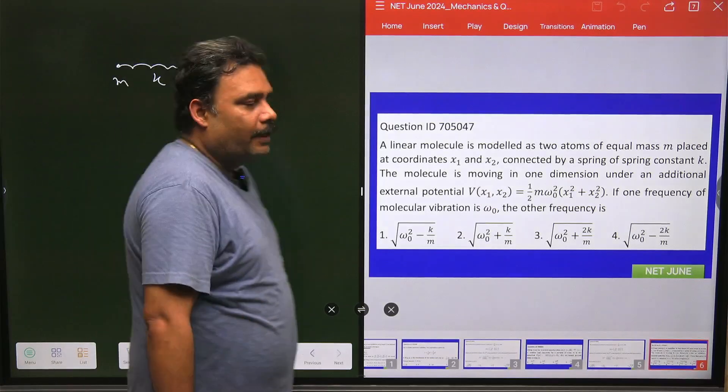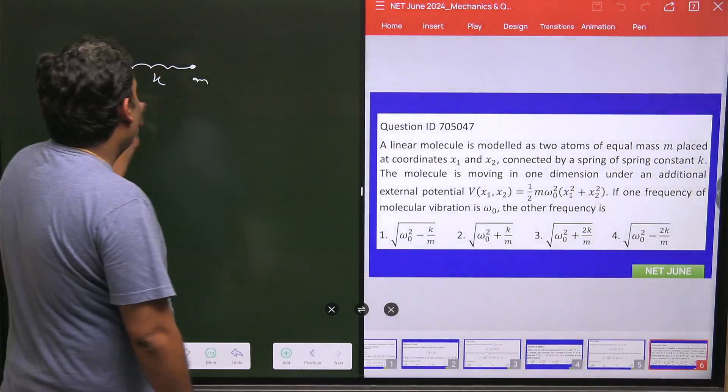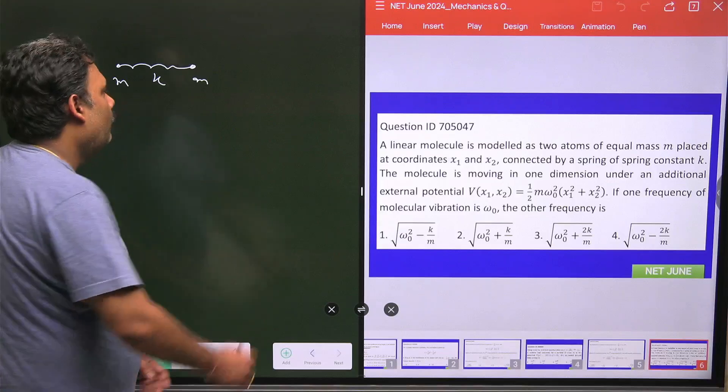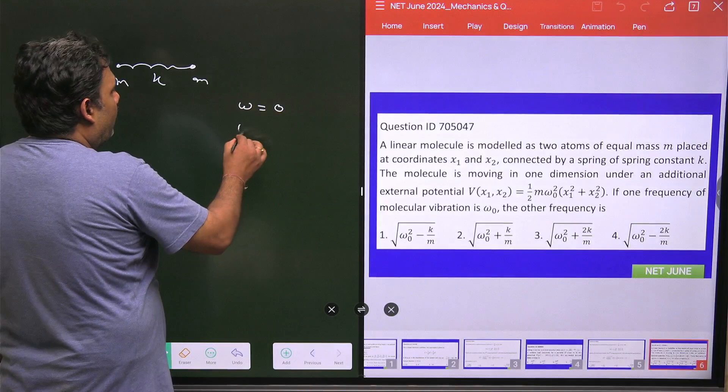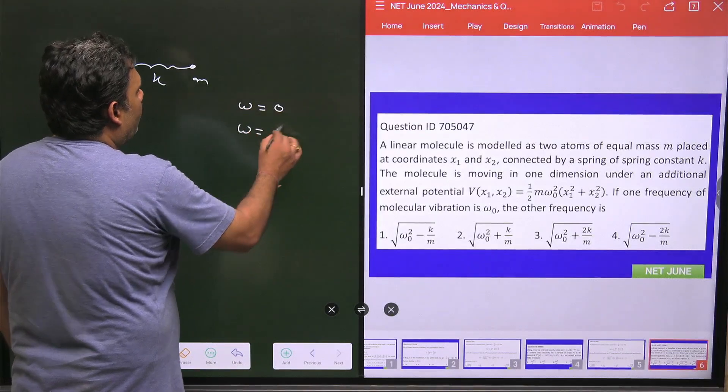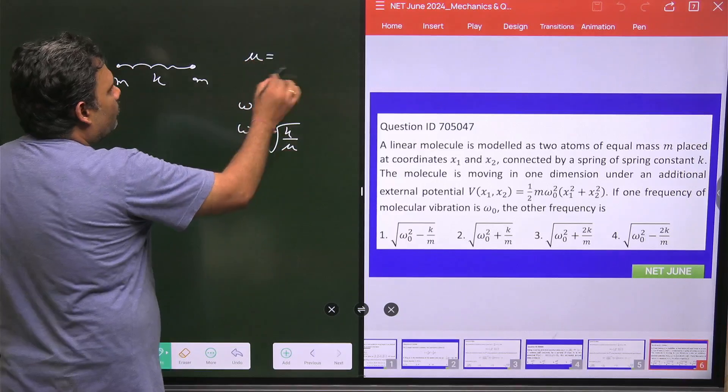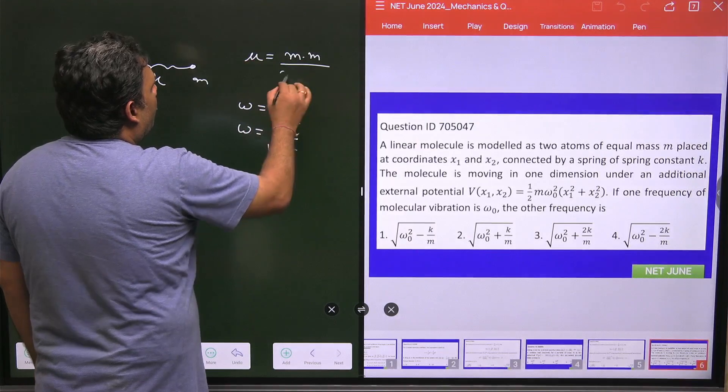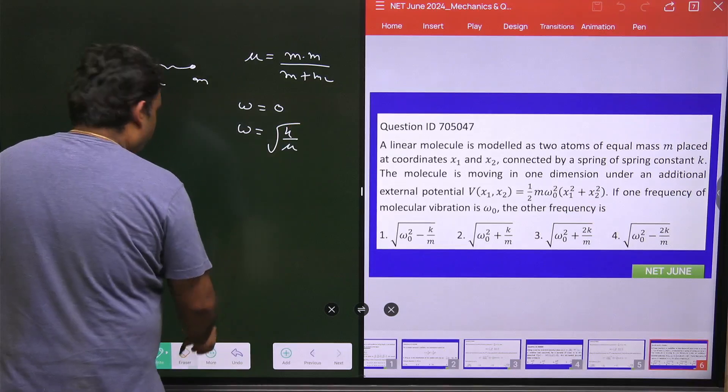If you solve this diatomic molecule, the angular frequency is ω = 0 and ω = √(K/μ). What is your μ? μ is your reduced mass: M·M/(M+M) = M/2.